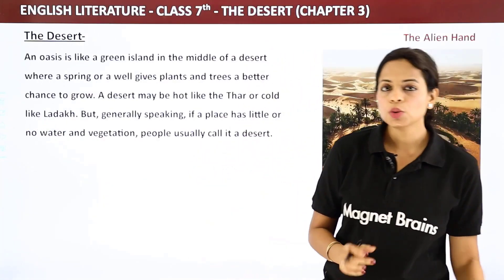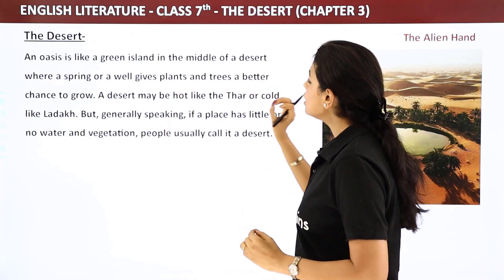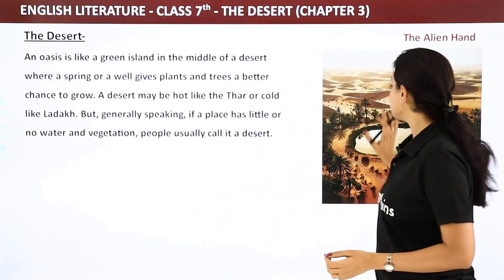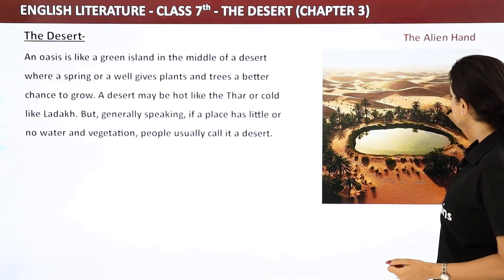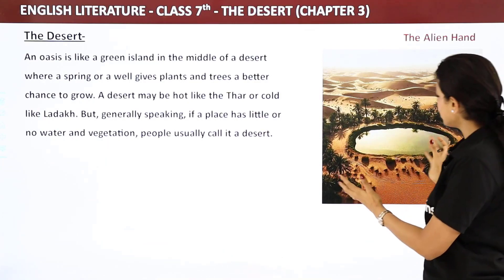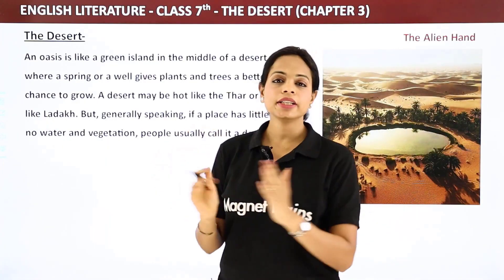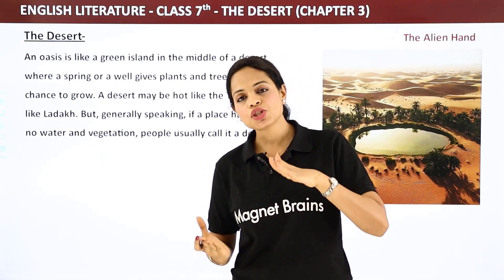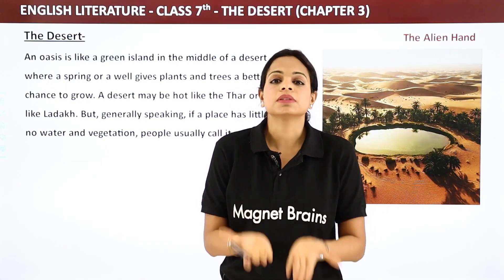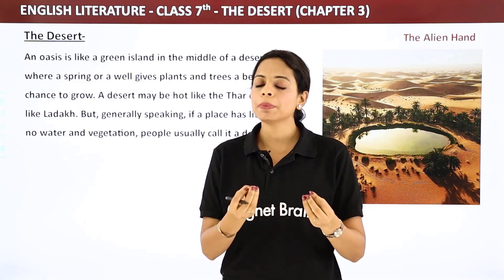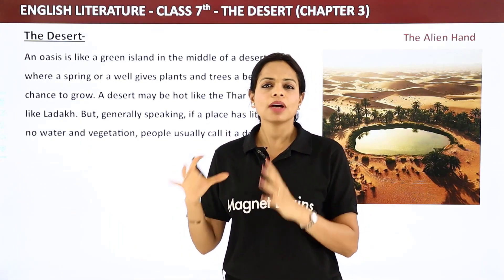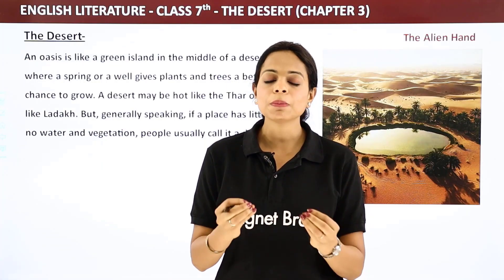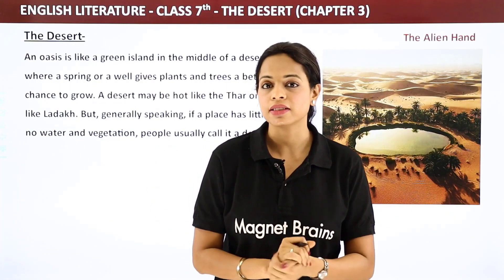Oasis kya hota hai? An oasis is like a green island in the middle of a desert where a spring or a well gives plants and trees a better chance to grow. If you look at this image, you can see the sand dunes and in the middle a small lake or pond. Agar koi river hoti hai ya niche koi bhi paani ka reservoir hota hai, and when the pressure becomes too high, it comes up to the surface — yeh especially arid regions mein hota hai. Inko hum oasis kehte hain.